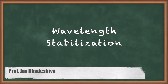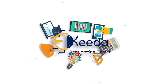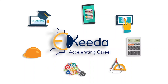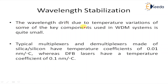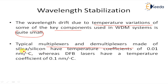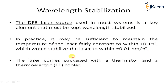Here we are going to learn about wavelength stabilization. The wavelength drift due to temperature variation of some key components used in WDM systems is quite small. Consider a typical multiplexer and demultiplexer made of silicon — they have a temperature coefficient of 0.01 nanometers per degree Celsius. In the case of a DFB laser, the temperature coefficient is 0.1 nanometers per degree Celsius.